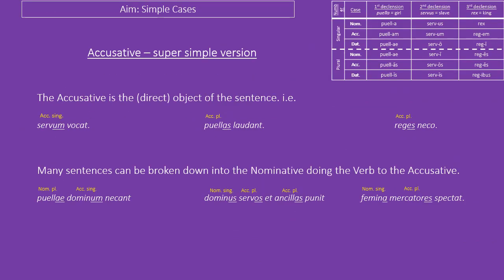The accusative is therefore the object. Notice particularly in these first few sentences I have always given the accusative first — there is no nominative in the sentence as such. You need to look at the verb. The first sentence ends with a 't,' so he or she or it calls the slave. Second sentence: they praise the girls because it's an '-unt' ending — the girls aren't doing anything, they're accusative, something is happening to them. And the last sentence: 'I kill kings' — that '-o' ending means I'm doing it. Most sentences at early levels of Latin are nominative doing verb to accusative.